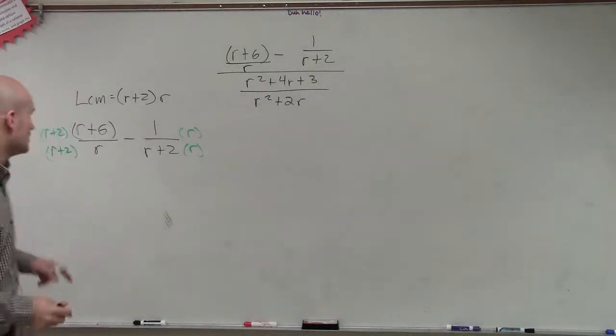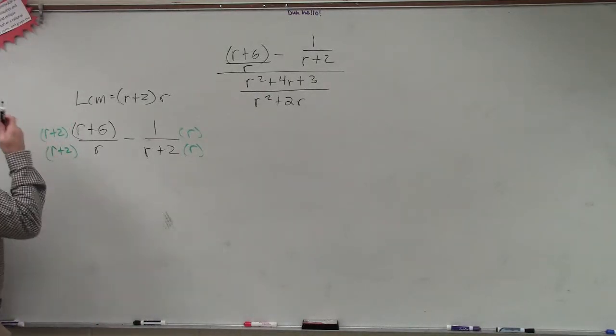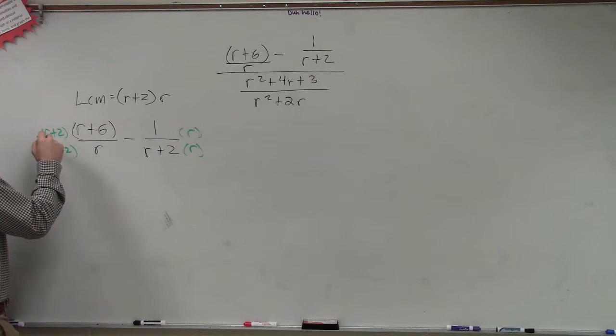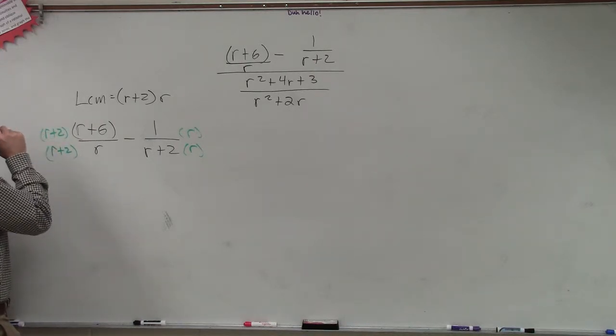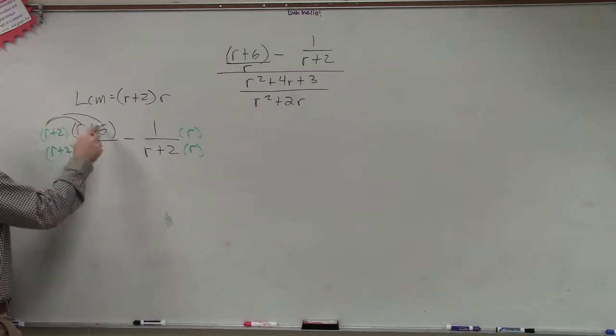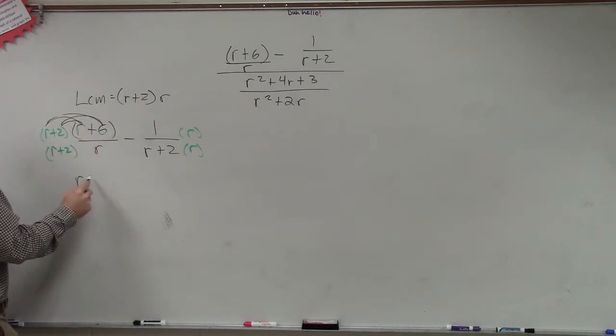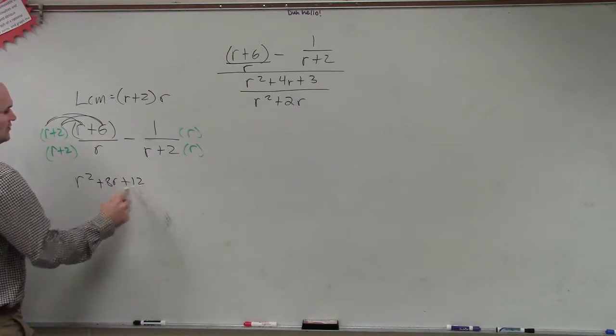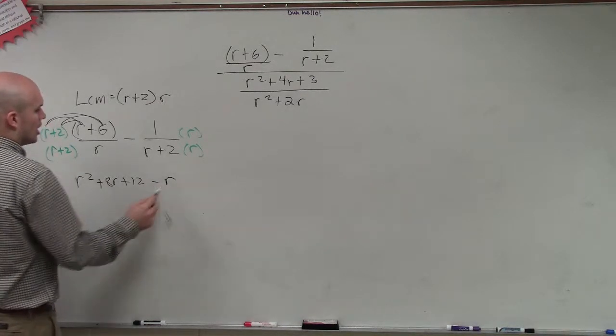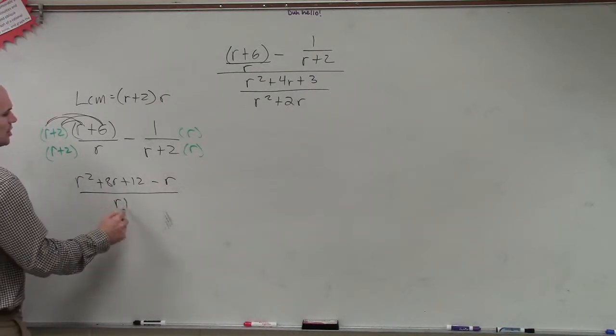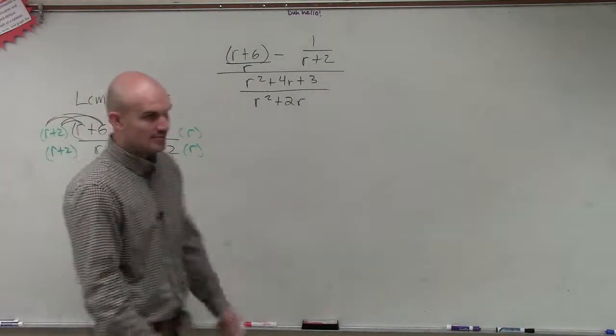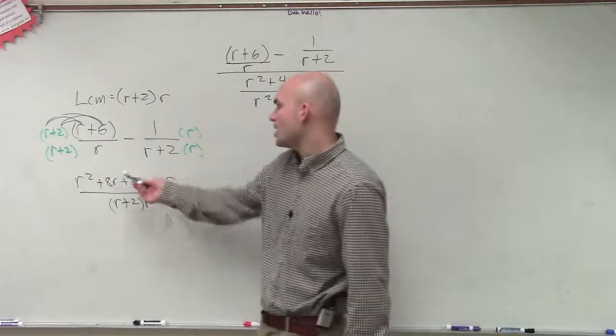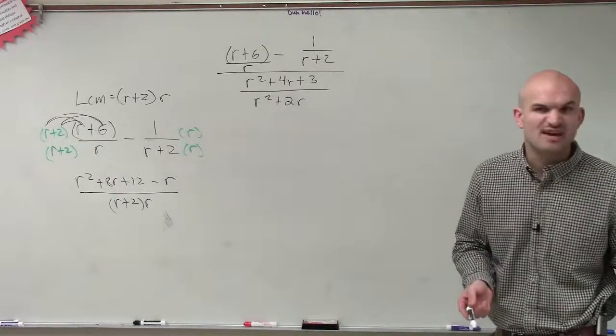So then what we do is we multiply it across, and we end up getting, now here, I can multiply this out. Now, let's multiply this out by using foil. So when you guys use foil, you end up going to get r squared plus 8r plus 12 minus r, all over r plus 2 times r. Does everybody agree with that? Yes? OK, and then if I just do 8r minus r, I'm going to end up going to get 7r, right?